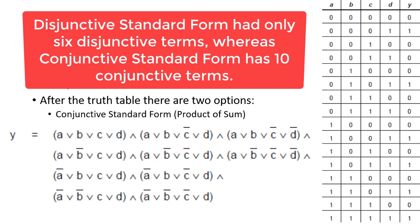For example, if there were more 1s in the output column than 0s, then the Disjunctive Standard Form would have generated a long equation and the Conjunctive Standard Form would have generated a smaller equation. In this particular example, the Disjunctive Standard Form is simpler, so it would be easier to simplify using Boolean algebra rules.